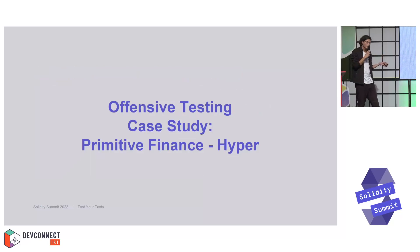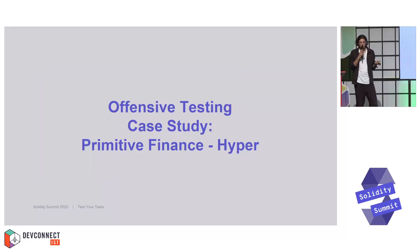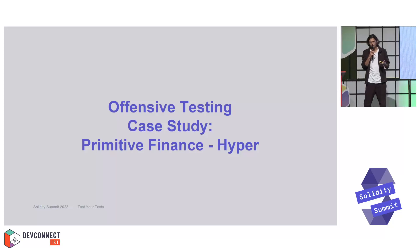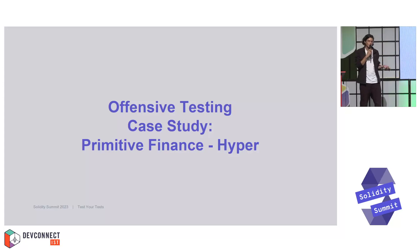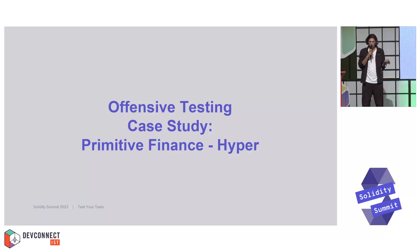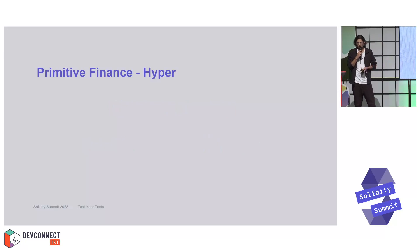That was mainly about defensive testing — trying to make sure your tests are as robust as possible, covering every angle, and really specifying the behavior of your implementation. Now we'll talk about offensive testing, where in contrast we simply want to invalidate a certain invariant. For this, we'll be looking at Primitive Finance, back then called Hyper.